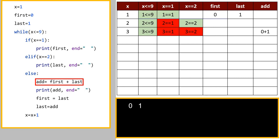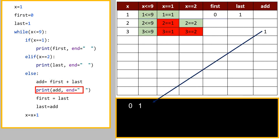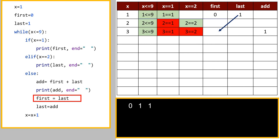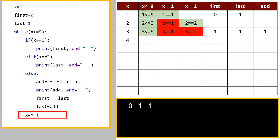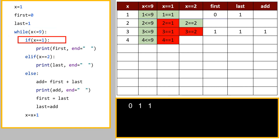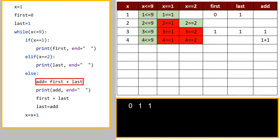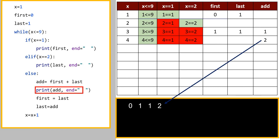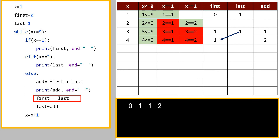add equals first plus last — value of first is 0, value of last is 1 — it adds and stores into variable add. Value of add is 1. It prints value of add, which is 1. Then last is assigned to first variable — value becomes 1. Value of add is assigned to last variable — also 1. x increments to 4. 4 is less than equal to 9 — yes. 4 equal equal to 1 — no. 4 equal equal to 2 — no. Add becomes 1 plus 1 equals 2, and 2 is printed on the output screen. First gets 1 and last gets 2.